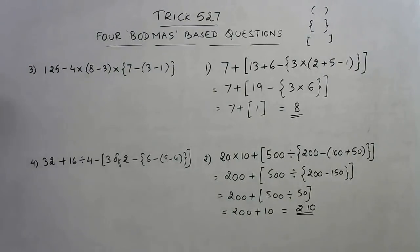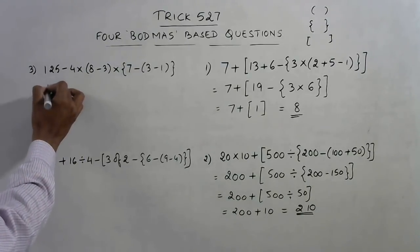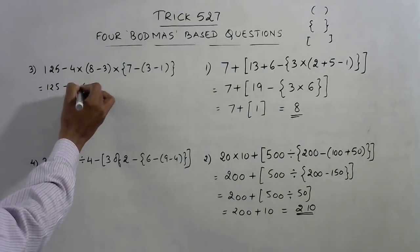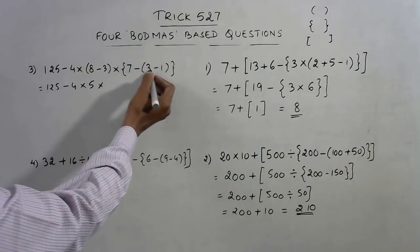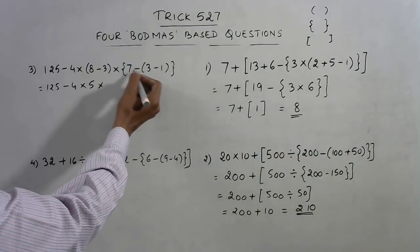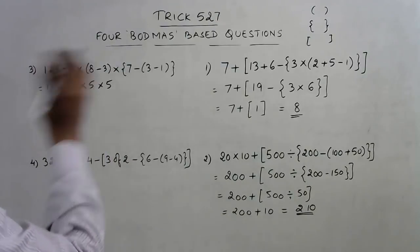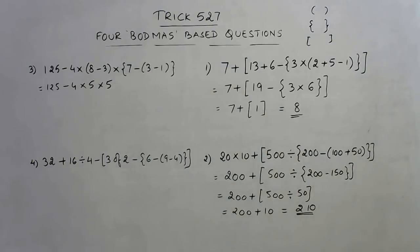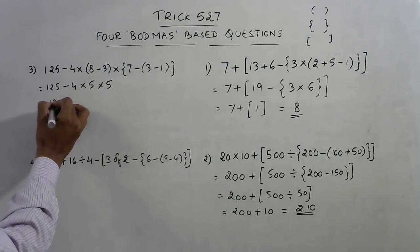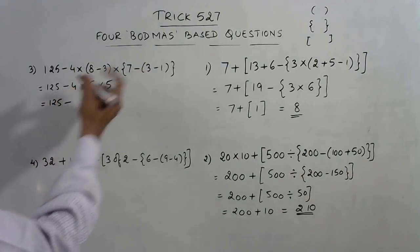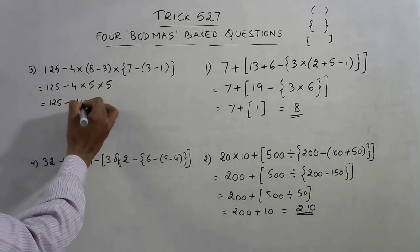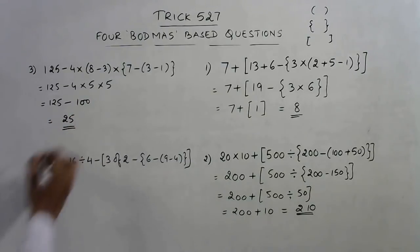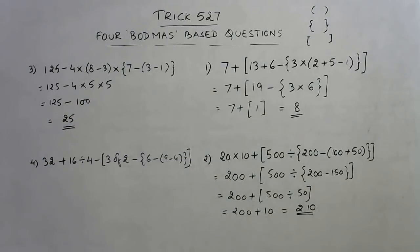For the third question: 125 minus 4 times — inside the brackets, 3 minus 1 is 2, and 7 minus 2 is 5. All brackets are removed in a single step. Now we multiply before subtracting: 5 times 5 is 25, times 4 is 100. So the answer for this question is 25.